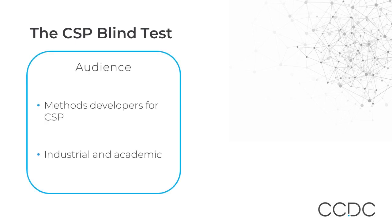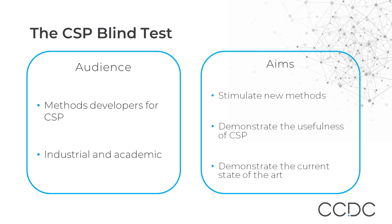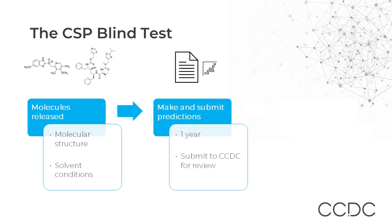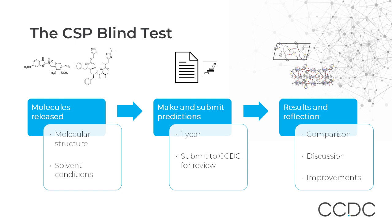CCDC for the past 30 years has been running the CSP blind test. These tests are aimed at methods developers of CSP and are designed to stimulate new and innovative ways to tackle the problem, while also demonstrating to the broader community the usefulness of CSP and the current state of the art. First, we canvass collaborators to derive a set of structures that have been experimentally analysed but are currently not in the public domain. The 2D molecular structure and some experimental conditions are released, and participants have one year to make and submit their predictions using their best CSP methods. Once the submissions are in, we reveal the experimental results and compare them to the predictions, review the outcomes and publish the findings. The system allows those building CSP methods to test and validate their technique against real life data, with participation from across pharma and academia using many different approaches.